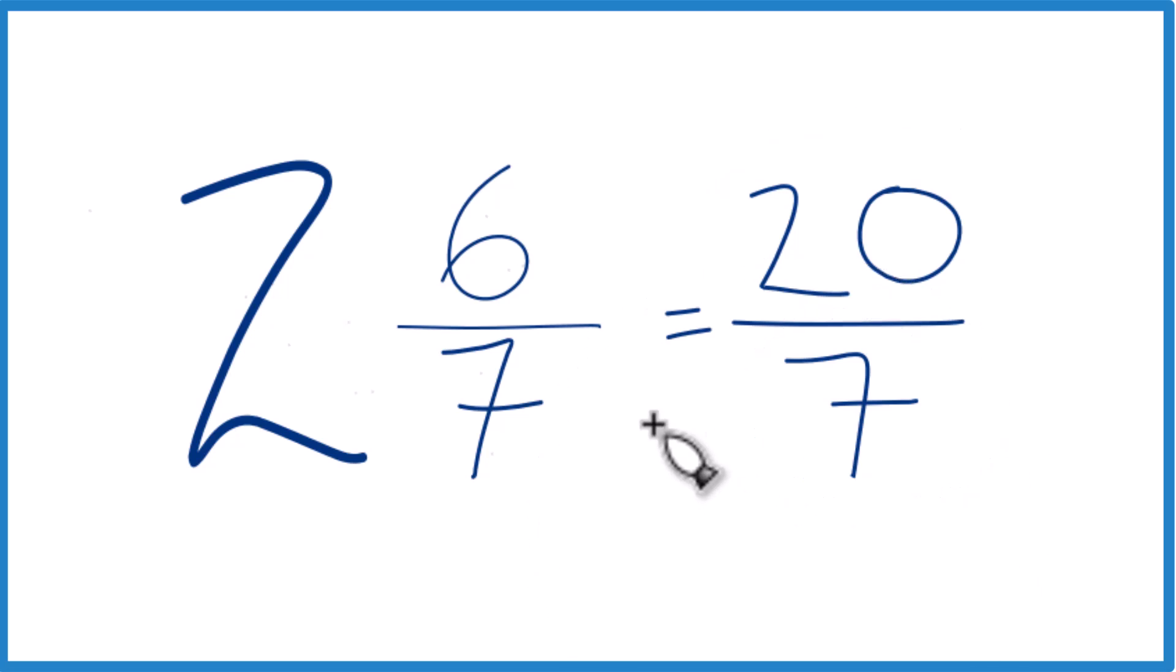And these are equal. They're equivalent. 2 and 6 sevenths, that equals 20 sevenths. It has the same value. Just here we're representing it as an improper fraction.